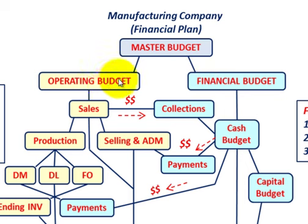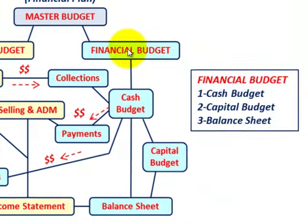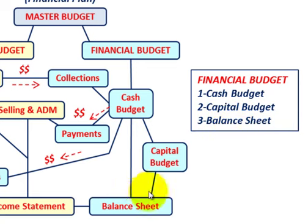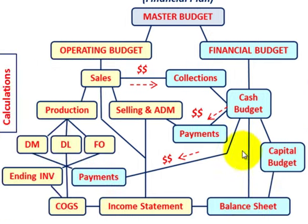In our example, we're going to be looking at the operating budget and all the budgets underneath it, going through the calculations we'd have to make to determine each. But first, let's look at the financial budget, which includes: number one, a cash budget; number two, a capital budget; and number three, a budgeted balance sheet — all integrated with the operating budget.